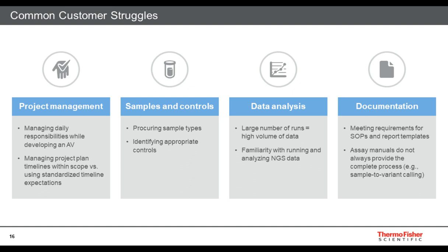The second struggle is samples and controls — do you have samples in-house already, and do you know what controls to include for each study? Data analysis is another challenge: during an analytical validation we can be looking at upwards of 20 or more runs depending on multiplexing. Labs that are very new to next-gen sequencing and data analysis may not have the capacity to process 20 runs worth of data analysis in the four-to-six weeks allocated. Finally, documentation — compliance documentation, your validation report covering all aspects, and your SOP.